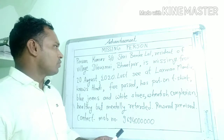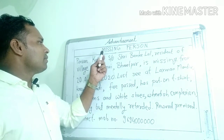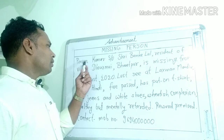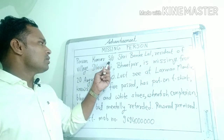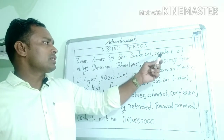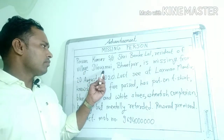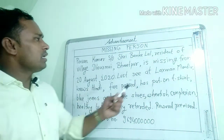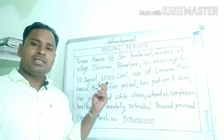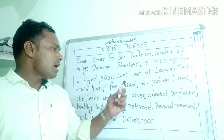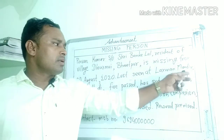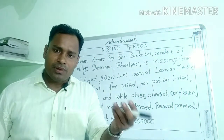यह advertisement एक box में लिखा जाता है। Missing person का नाम है Pawan Kumar, पिता जी का नाम K. Lal है। वो निवासी है Village Dormui, Bharatpur — भरतपुर के दोर्मई गाँव का निवासी। वह 20 August 2020 से missing हैं — गायब हैं। अंतिम बार उन्हें Lakshman Mandir, Bharatpur में देखा गया था।